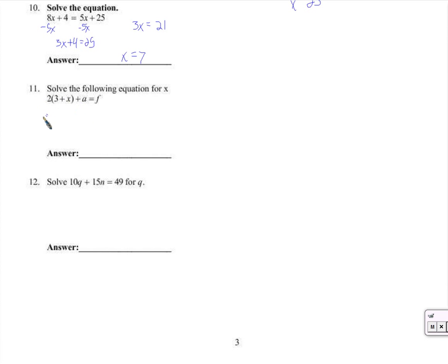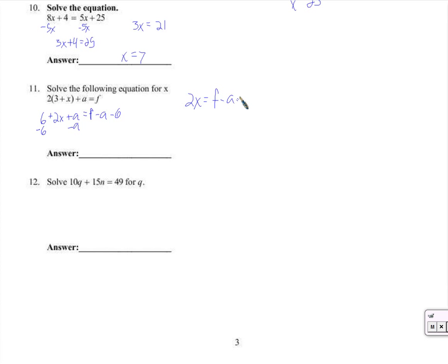Distributing is just sitting there — I really like distributing, so I distribute like a madman. Now, what are we solving for? Solving for x. I don't want A and I don't want 6 — they are being added to 2x, so I subtract them. A minus A is nothing, 6 minus 6 is nothing. Now nothing is added to 2x on this side, and we have 2x equals F minus A minus 6. No matter what this looks like, if you have 2 times x equals anything — 14, 21, 17, 48 — you divide by 2 on both sides.